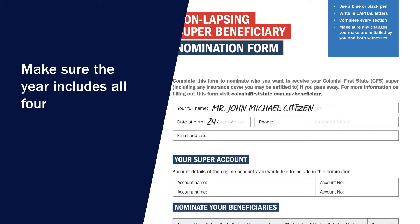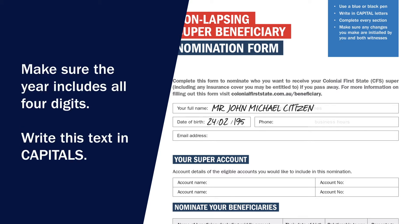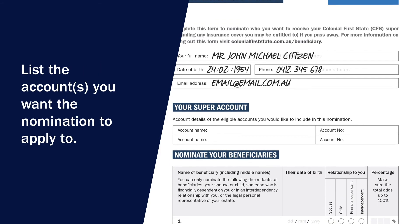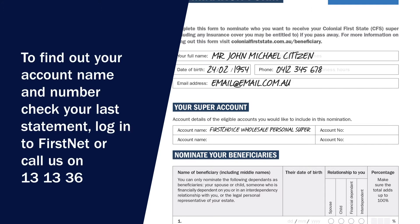Fill out your date of birth as well as your preferred contact phone number and email address. Next, fill in the account or accounts you want the nomination to apply to. To find out your account name and number, check your last statement, log in to FirstNet, or call us on 13 13 36.